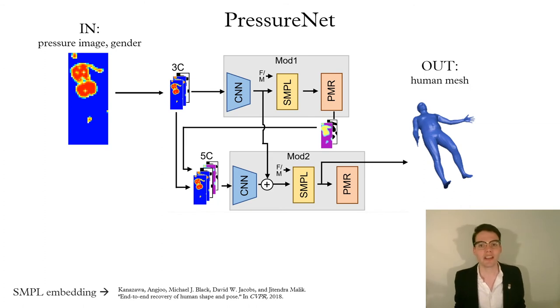Using this data, we trained PressureNet, a deep learning model that inputs a pressure image and a gender and outputs a human mesh estimate. PressureNet consists of two modules, each of which contain a CNN, an embedded SMPL human model, and a novel PMR component.